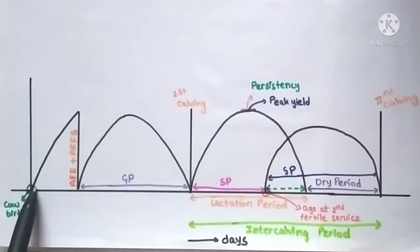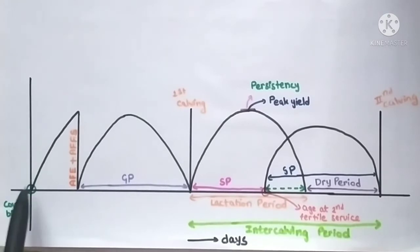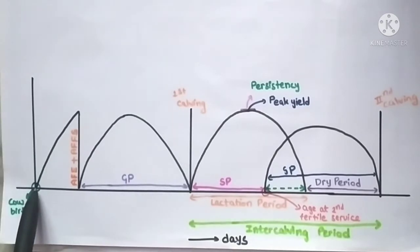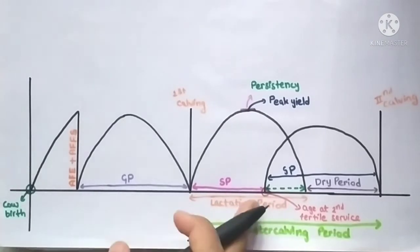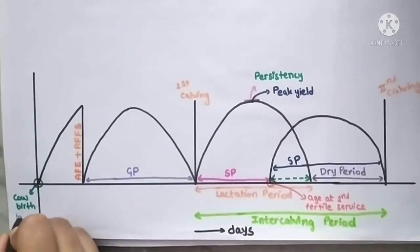In this graph, suppose the cow's birth is at this point. After the cow birth, we measure the weight of the newborn calf, which is known as birth weight.